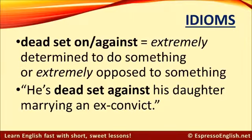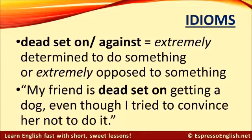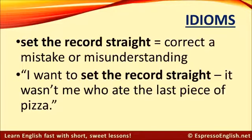If someone is 'dead set on' something or 'dead set against' something, it means the person is extremely determined to do something, or extremely opposed to something. For example: 'He's dead set against his daughter marrying an ex-convict' — an ex-convict being someone who was convicted as a criminal. Or in favor: 'My best friend is dead set on getting a dog, even though I tried to convince her not to.' So 'dead set' means extremely determined, either in favor of something or against it. 'To set the record straight' means to correct a mistake or misunderstanding. For example: 'I want to set the record straight — it wasn't me who ate the last piece of pizza.'